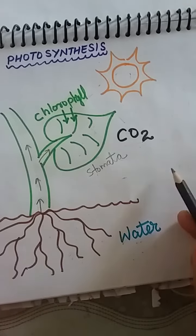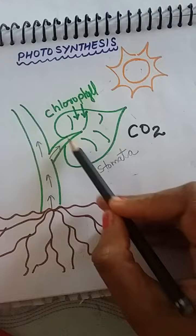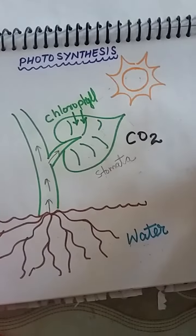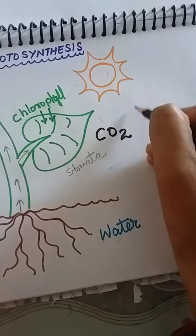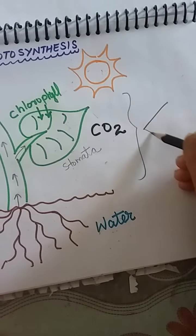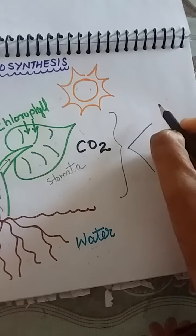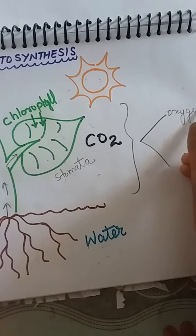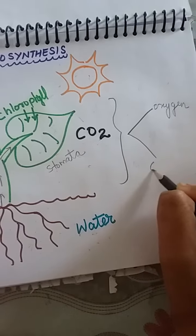Then, when the photosynthesis process takes place in the leaf, two products are produced. One is oxygen and the other is glucose.